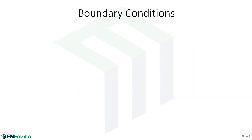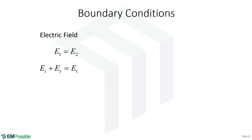Now let's get into the math. Let's write some equations for our boundary conditions. First, we have the electric field boundary conditions. This says the electric field on the left side of the interface in medium one has to equal the electric field in medium two right up against the interface. In medium one, that's the incident electric field plus the reflected electric field. And in medium two, there is only a transmitted electric field. So that's our boundary condition for the electric fields.